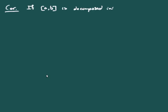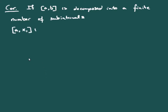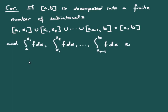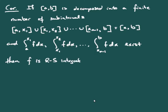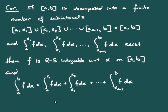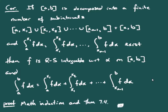A natural corollary: if [A, B] is decomposed into finitely many subintervals A to x₁, x₁ to x₂, …, x_{N-1} to B, and f dα is integrable over each subinterval, then f is Riemann-Stieltjes integrable over [A, B] and the integral equals the sum of the integrals over those subintervals. The proof follows by mathematical induction on Theorem 7.4.